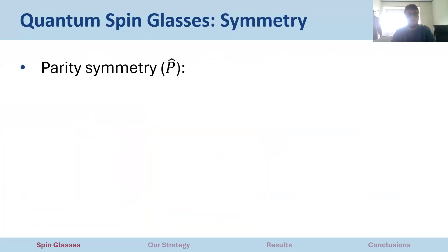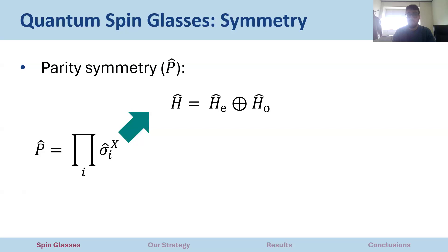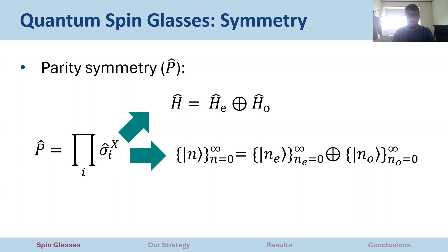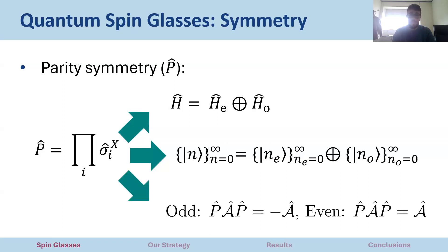Another important property of this system is that if we flip all the spins in the lattice the energy does not change — we say the system has parity symmetry. This transformation is performed by the parity operator and allows us to split the energy spectrum into two sectors. We can classify states according to the effect of this parity operator, having even states and odd states. Similarly, we can define even and odd operators.